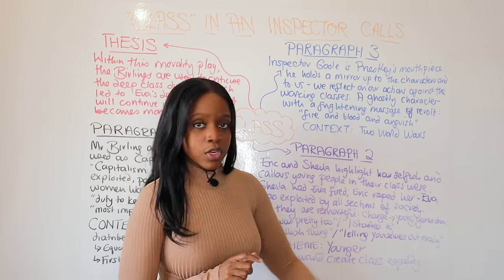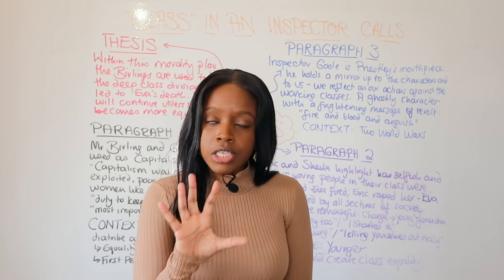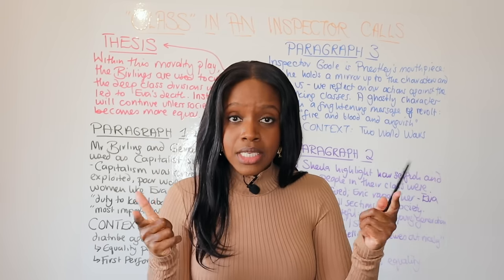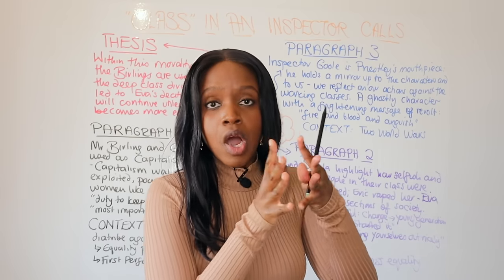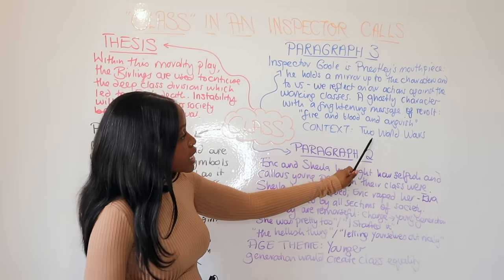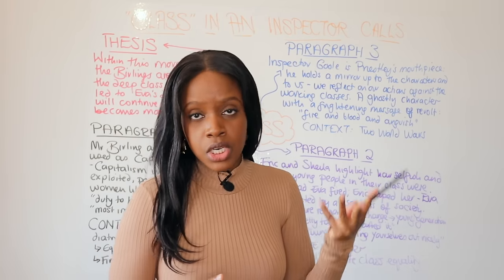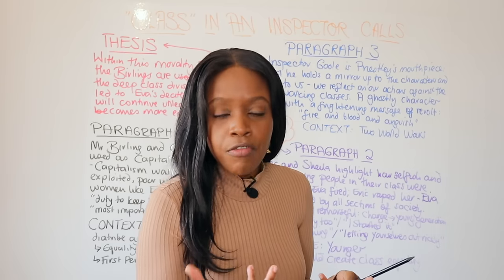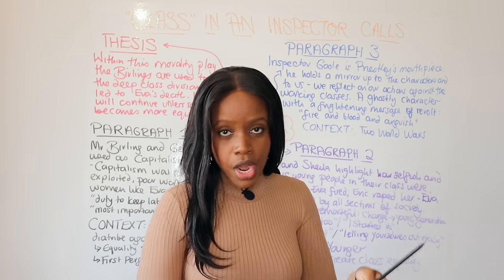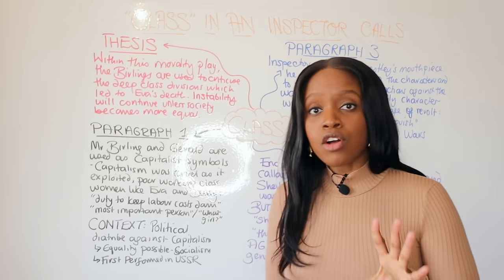Before he leaves, Inspector Goole warns that if the Birlings don't change they will face 'fire and blood and anguish.' This rule of three powerfully illustrates that society faces more instability if class equality doesn't happen — if people don't change how they treat the working classes and if wider society doesn't shift from capitalism toward socialism. Tie this to the contextual observation that the play was set in 1912, just before the First World War (1914–1918), and was written and staged in 1945 at the end of the Second World War (1939–1945), underscoring Priestley's warning about the consequences of inequality.